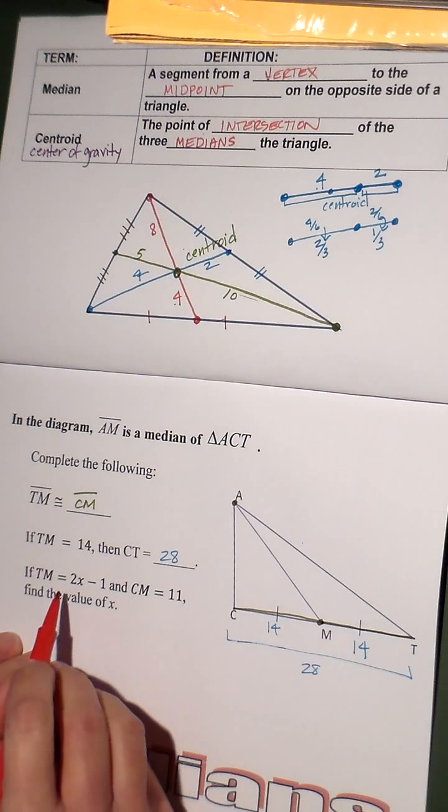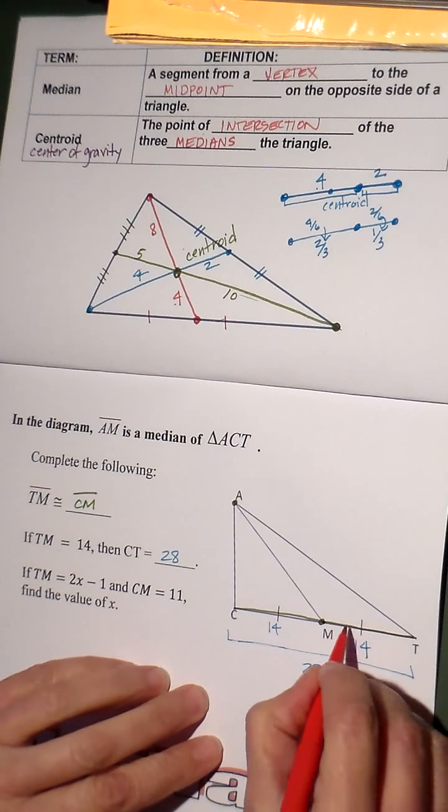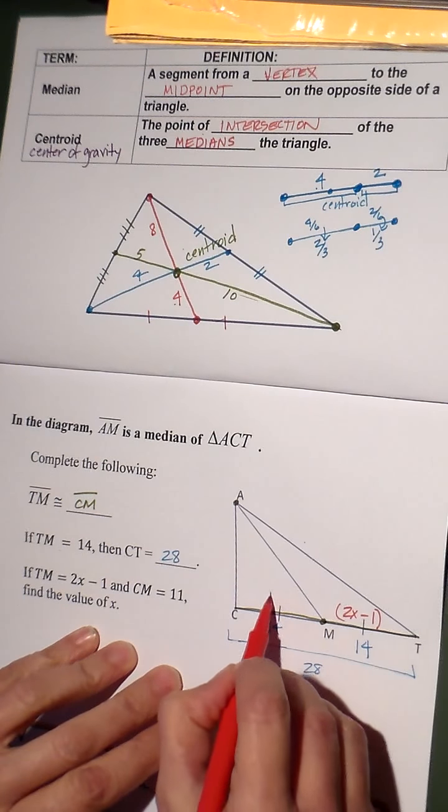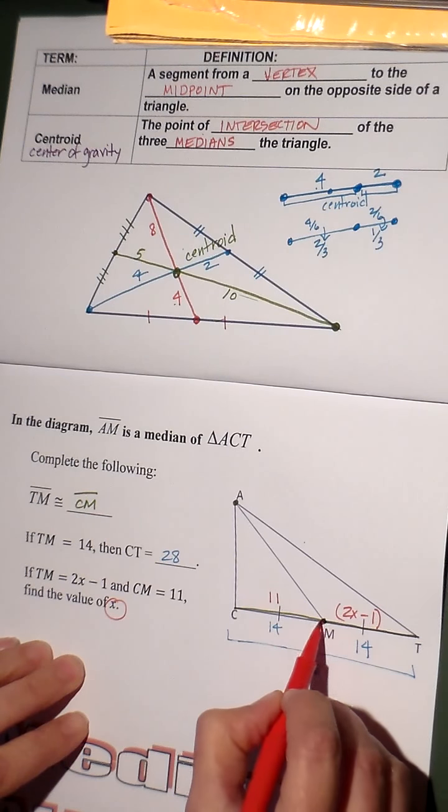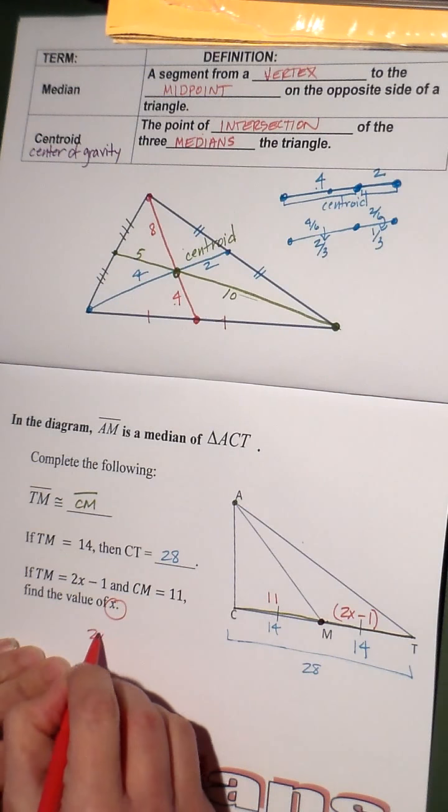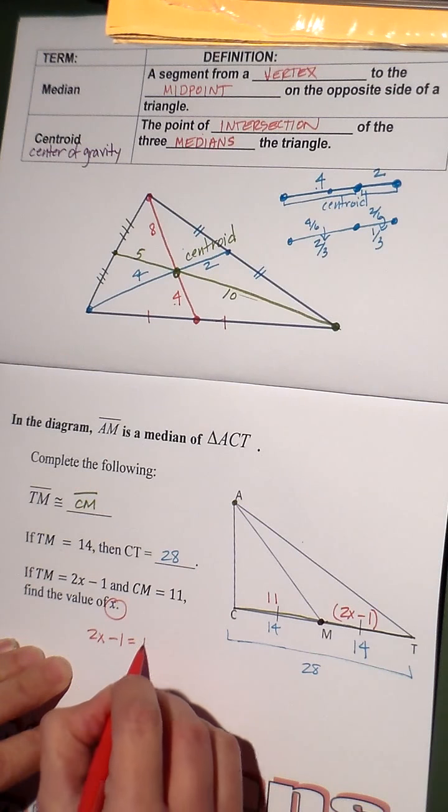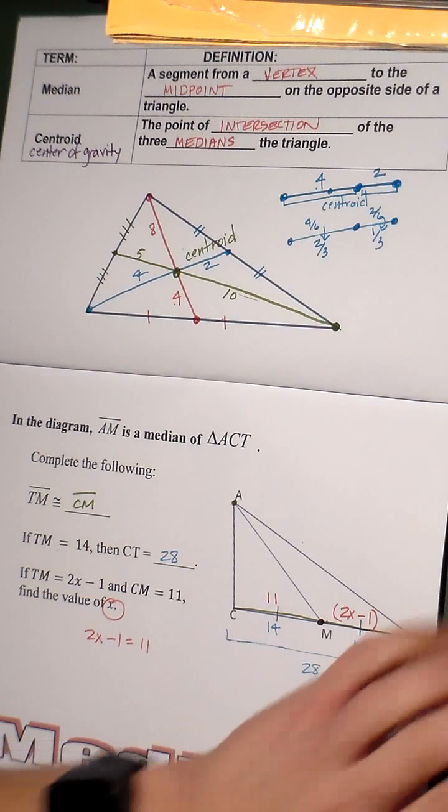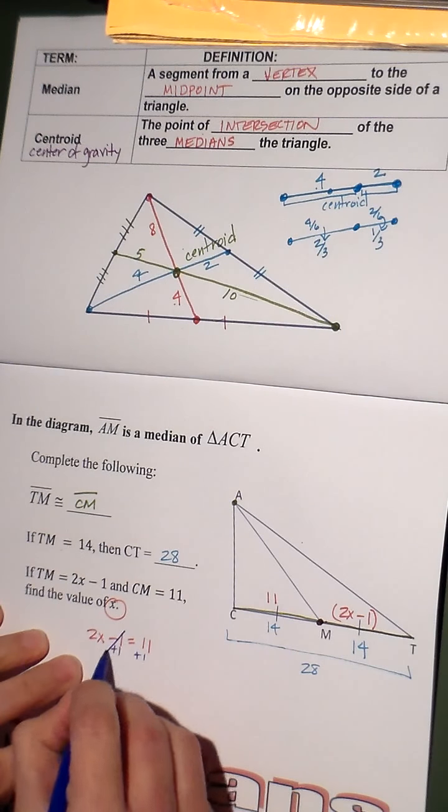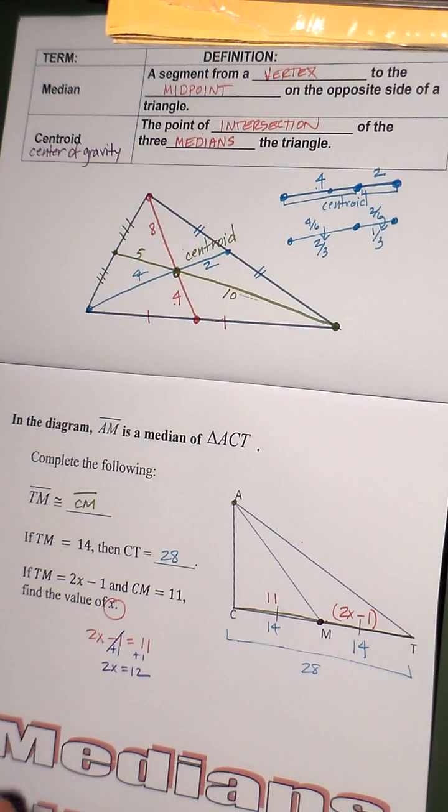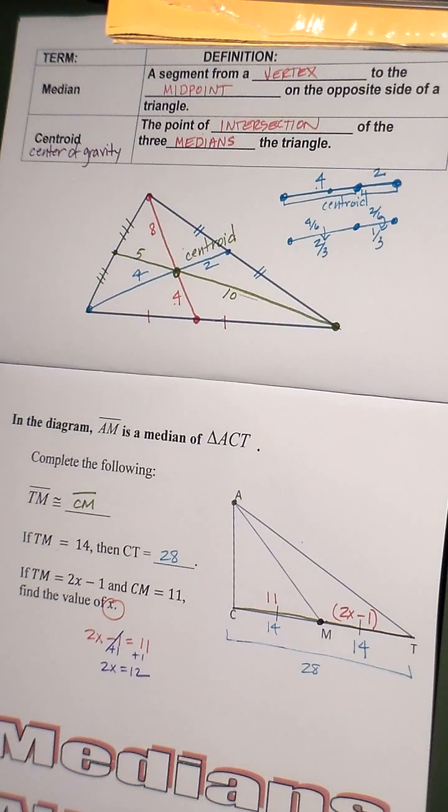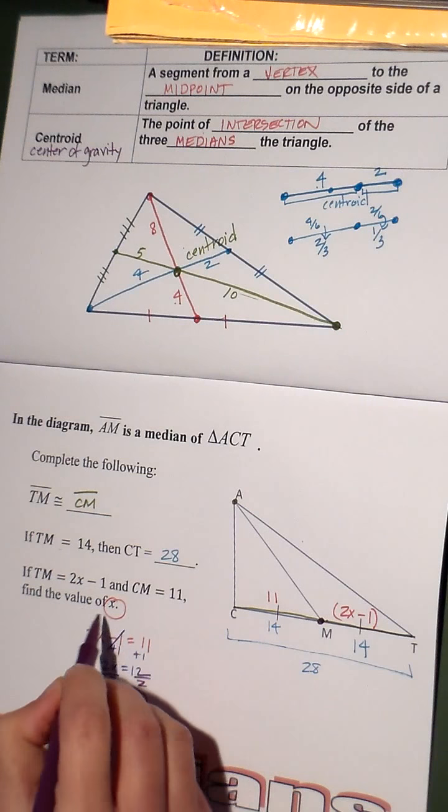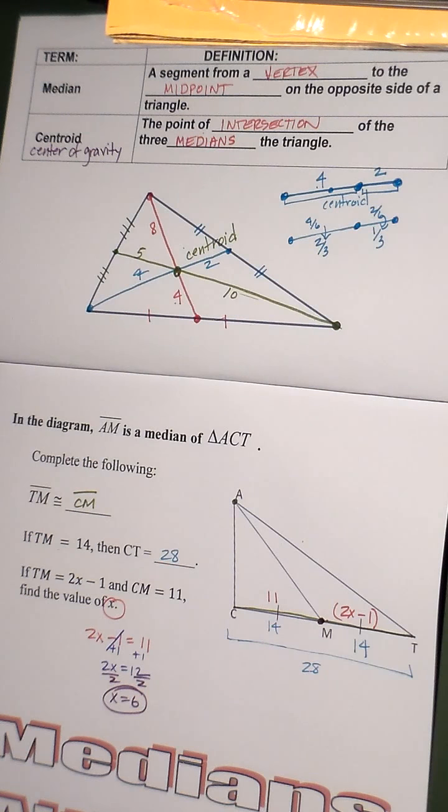All right, the last one. If TM is 2X minus one and CM equals eleven, find X. Well, since this is a median, that is a midpoint, that means 2X minus one has to equal eleven because that's the midpoint. So, I'm going to solve this one out and add one to both sides. So, 2X equals twelve and then I'm going to divide both sides by two, so X equals six. And that's all it's asking for is X, so you're done. And that's how you do the medians.